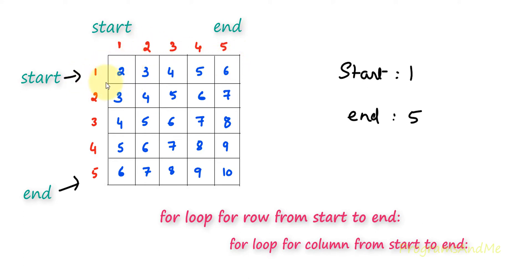In the first row, first we will add 1 and 1 to get 2, then 1 and 2 to get 3, then 1 and 3 to get 4, 1 and 4 to get 5, and 1 and 5 to get 6. After completing this row we will go to the next row. That's why first I need to take the for loop for row, and inside that I need to take the for loop for column.